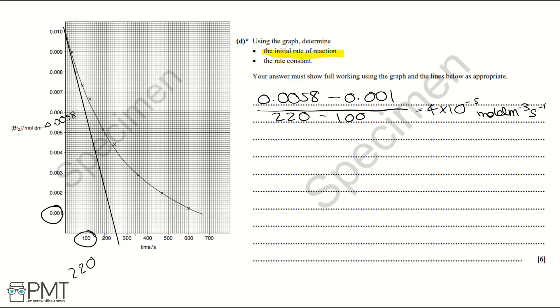Now we're going to try and work out the order with respect to bromine. So we do this looking at half-lives. Half-life is the amount of time it takes concentration to decrease by half. So if we look at 0.01 and then divide it by 2, we get 0.005. So if we look at the times for each of these, 0.01 is at t equals zero and 0.005 is at 190 seconds.